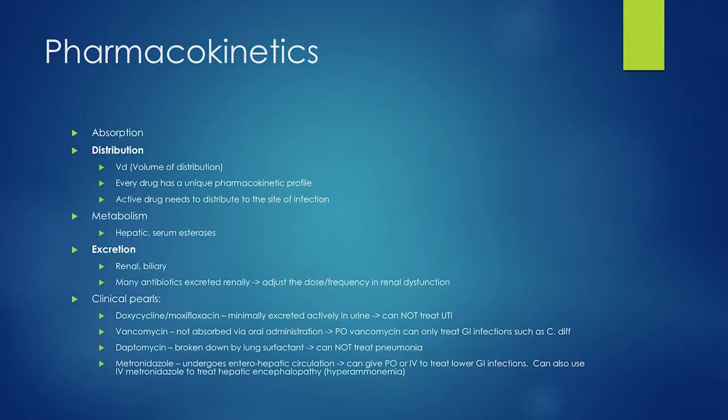Vancomycin is a very large peptide-type antibiotic — if you give it orally, none of it gets absorbed, so you can't treat systemic infections with oral vancomycin. But you can use this to your advantage: if a patient has a C. diff infection in the gut, you can give vancomycin orally and it goes all the way through and treats it.